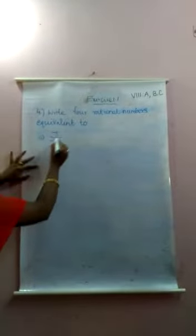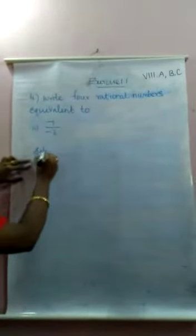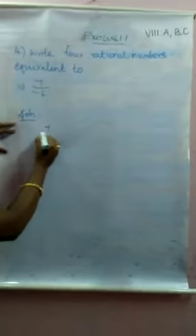Next is 7 divided by minus 6. We want to find the equivalent rational numbers for this 7 divided by minus 6. Here the denominator has a negative sign. The denominator with a negative sign needs to be changed first. But how will you change?